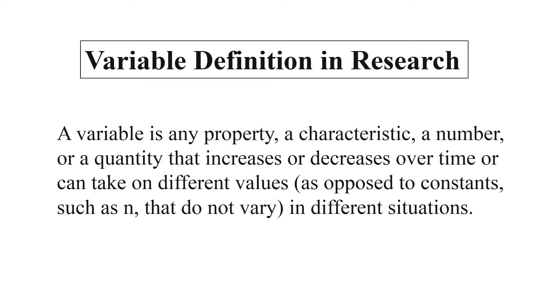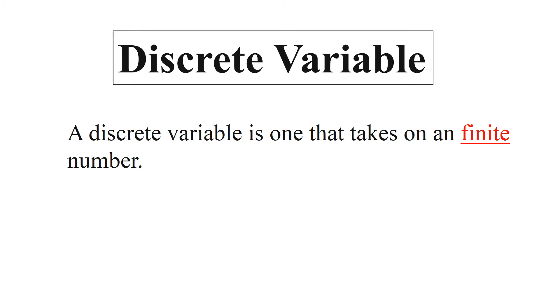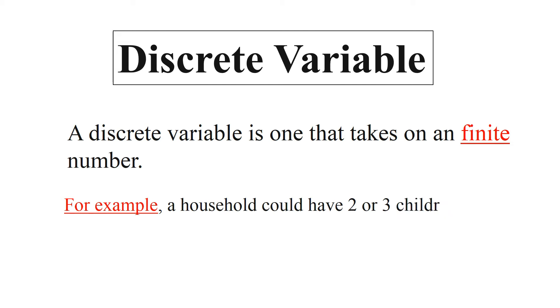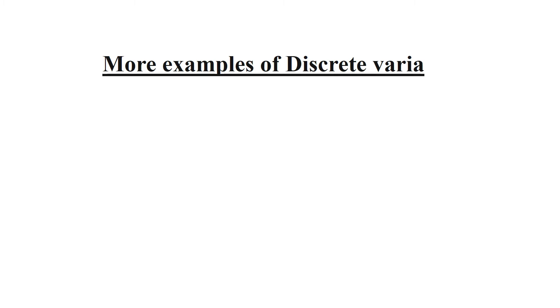Now let's discuss what is meant by a discrete variable. A discrete variable is one that takes on a finite number of values. For example, a household could have two or three children, but not 2.5 or 3.1 children. Any variable whose value lies in the whole numbers — that is, finite and not infinite — will be termed a discrete variable.